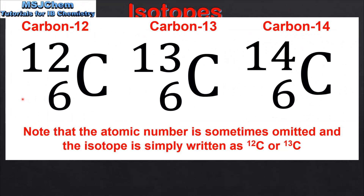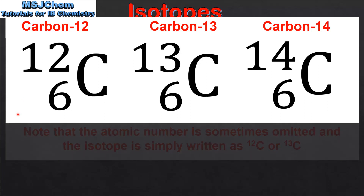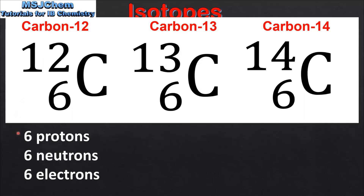We'll determine the number of protons, neutrons and electrons in each isotope. Starting on the left with carbon-12: its atomic number is 6, so this means it has 6 protons in its nucleus. If we subtract the atomic number from the mass number we get the number of neutrons, which is 6. And because these are neutral atoms, the number of electrons is equal to the number of protons.